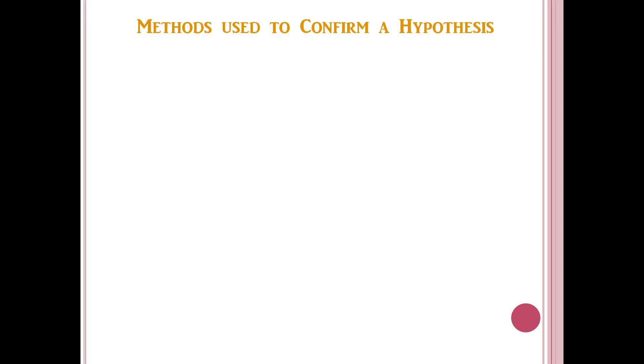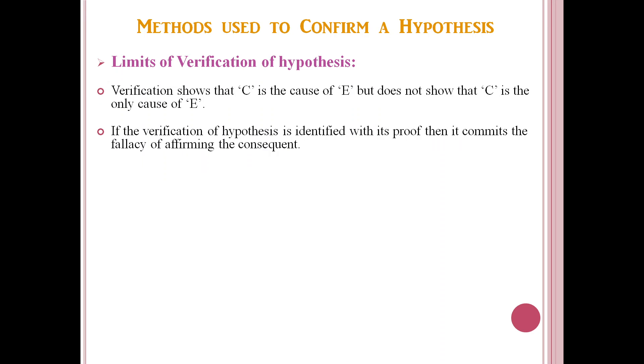Now we come to the limits of verification. Verification shows that C is the cause of E, but does not show that C is the only cause of E. If the verification of hypothesis is identified with its proof, then it commits the fallacy of affirming the consequent.